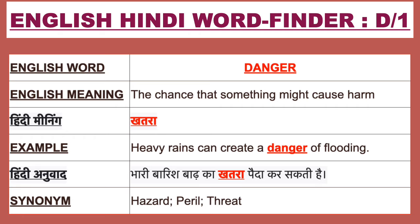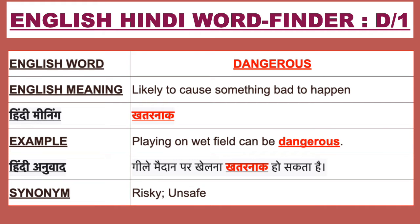Our next English word is 'dangerous'. The English meaning of dangerous is 'likely to cause something bad to happen'. Dangerous ka Hindi meaning hai 'khatarnaak'. For example: playing on a wet field can be dangerous. Is Hindi mein bulenge: gili maidan mein par khailna khatarnaak ho sakta hai. Synonyms of dangerous are risky and unsafe.